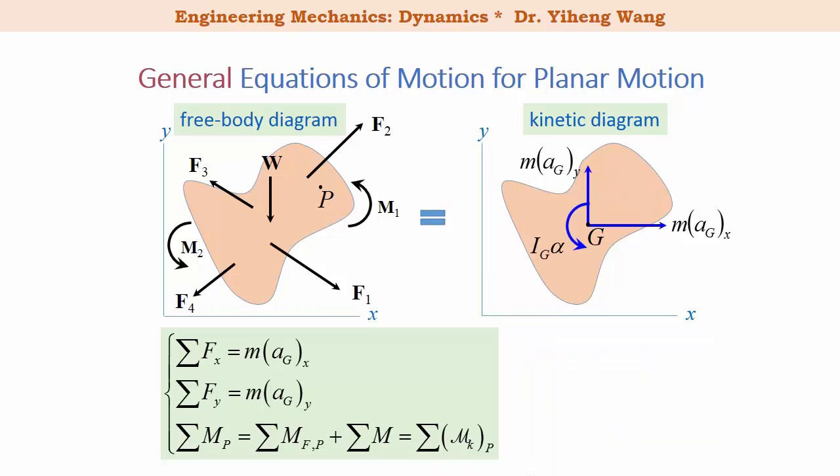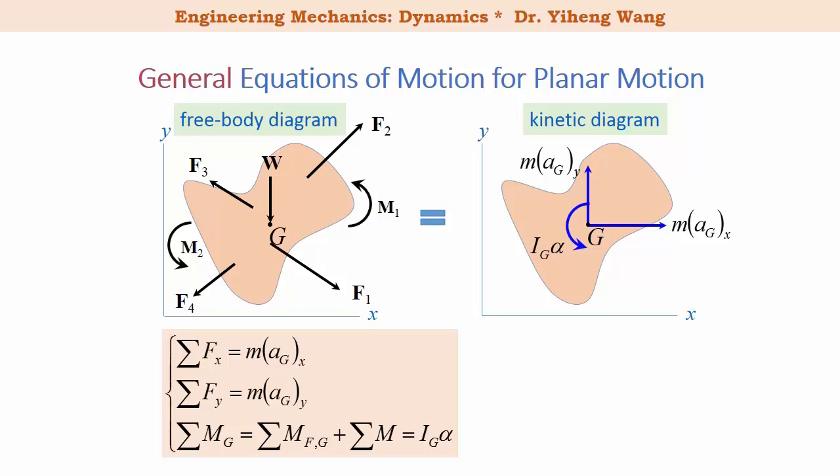Since the resultant moment is calculated about any arbitrary point P, for convenience we can summarize the resultant moment about the gravitational center G. This way, the two inertia force terms maGx and maGy both pass through point G and do not create any moment about it. Therefore, the resultant moment about point G simply equals IGα.